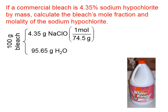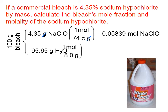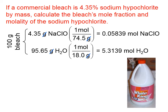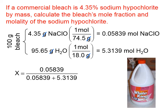Now let's convert those grams into moles, since we're asked to calculate mole fraction. Using the periodic table, we calculate the molar mass of sodium hypochlorite to be 74.5 g/mol, which gives us the moles of sodium hypochlorite. The molar mass of water is 18 g/mol, so we can calculate the moles of water. The mole fraction of sodium hypochlorite is the moles of sodium hypochlorite divided by the total moles — that is, moles of NaOCl plus moles of water. The mole fraction is always a unitless decimal less than 1; we never multiply by 100.